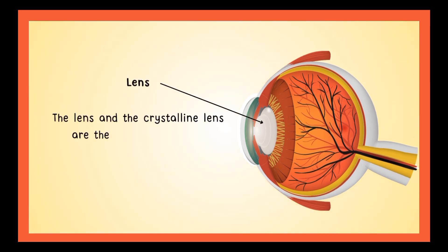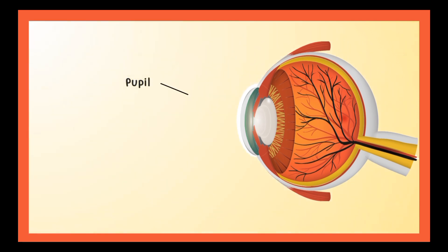The lens and crystalline lens are the same in the eye's anatomy, with the main purpose of focusing light onto the retina.